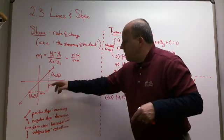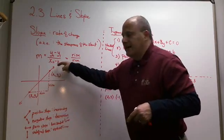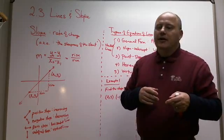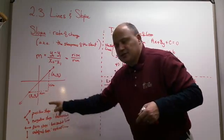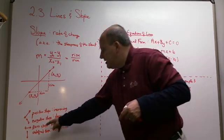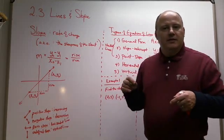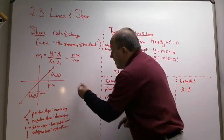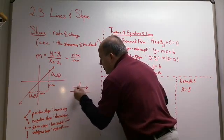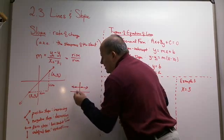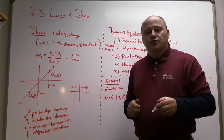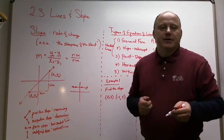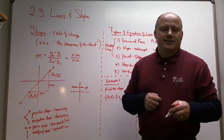When the graph is going up — increasing — it will have a positive slope. A negative slope means the graph is going down. A zero slope is a horizontal line, because the rise is zero. With a horizontal line, the two y-coordinates are exactly the same, so when you subtract them you get zero on top. Zero divided by any number is still zero, which is why a horizontal line has a slope of zero.